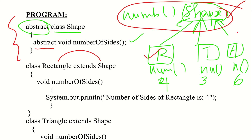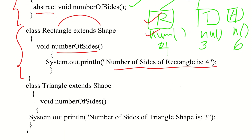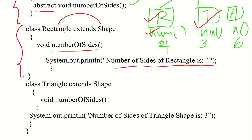Class Rectangle extends Shape. Now we define: void number of sides — the number of sides of a rectangle is 4. Similarly, class Triangle extends Shape — void number of sides — the definition is 3. The number of sides of the triangle shape is 3.